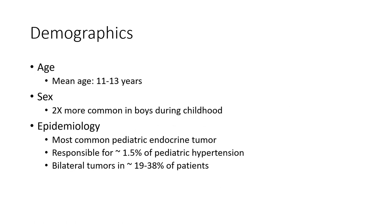Demographics: mean age 11 to 13 years, 2 times more common in boys during childhood. Epidemiology: most common pediatric endocrine tumor, responsible for 1.5% of pediatric hypertension. Bilateral tumor in 19 to 38% of patients.